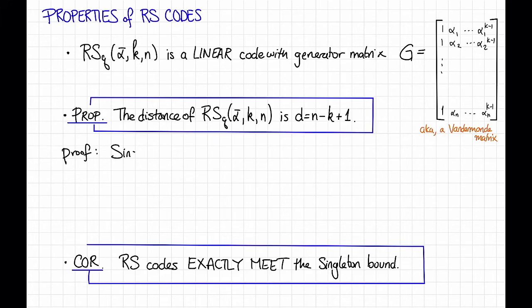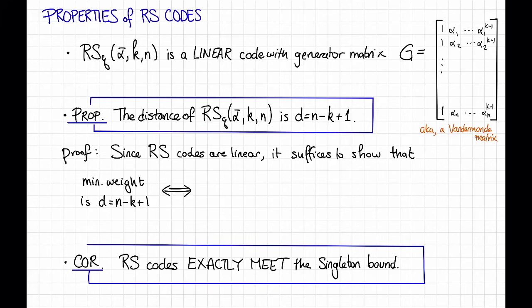First, since Reed Solomon codes are linear, as we just saw, it suffices to show that the minimum weight is not too small. More precisely, that the minimum weight is N minus K plus 1 of any non-zero code word. But that's the same as asking that the maximum number of zeros in any code word is K minus 1, that is N minus this.